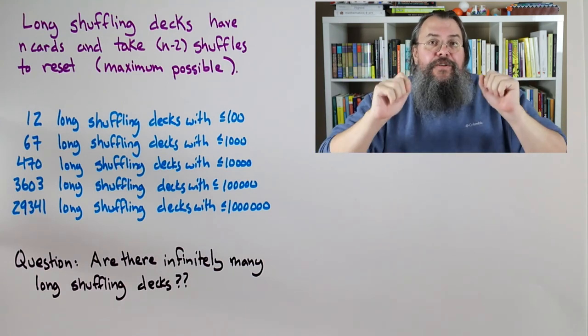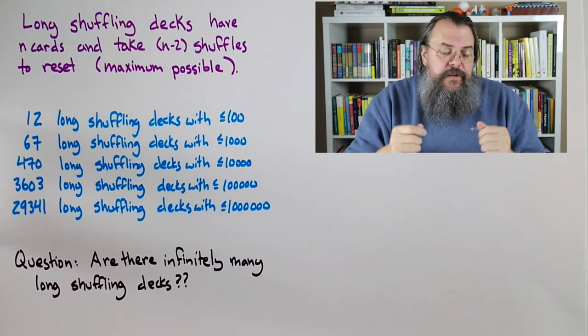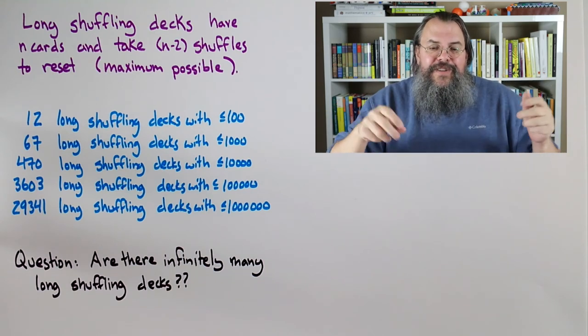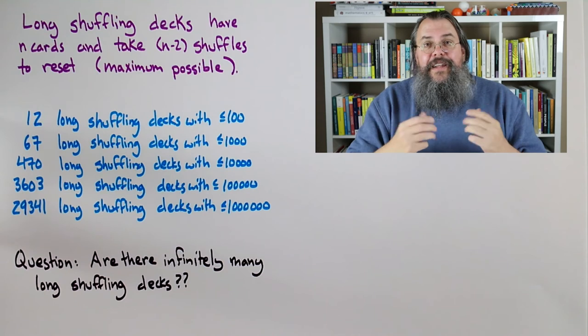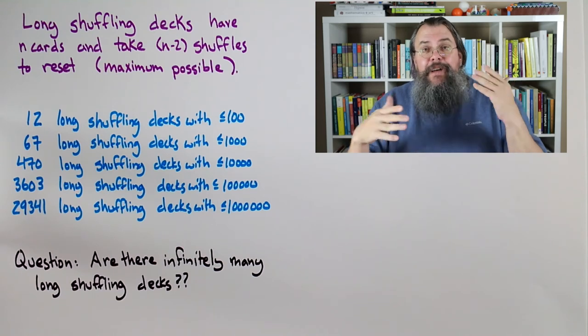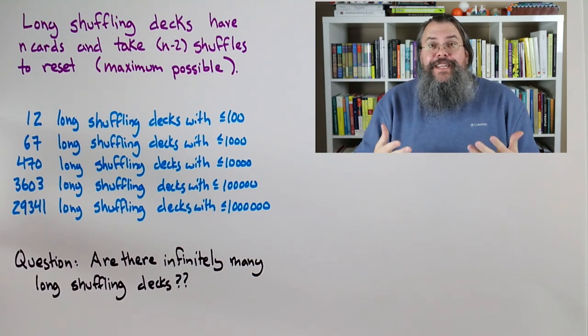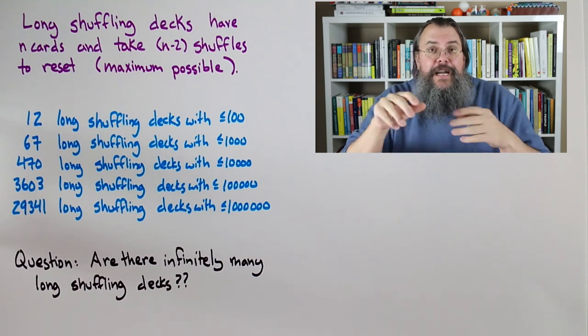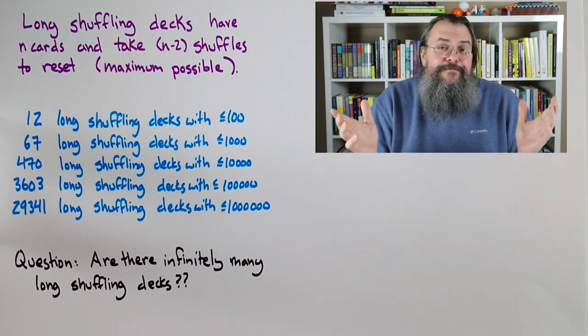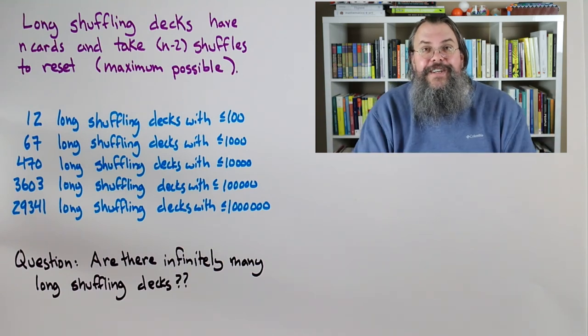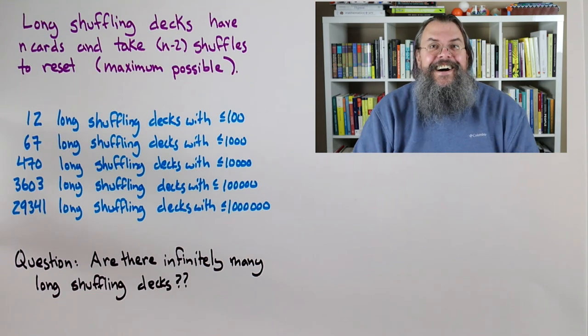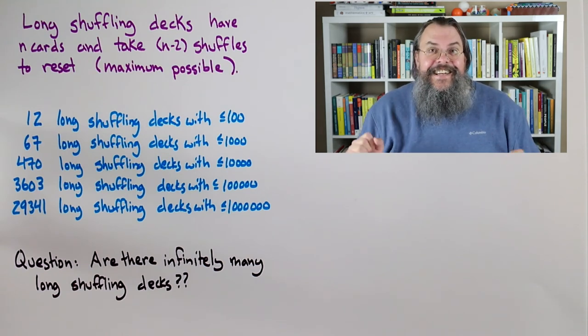And there's this beautiful question. Let's talk about for just a moment, because we're almost done here. Let's say a long shuffling deck is something where we have n cards, but it takes n minus 2 shuffles to reset. Now n minus 2 is the most that can ever happen. The reason the minus 2 is that the top and bottom cards never change position. So if it's n minus 2, what it says is that that card which is just below the top card cycles through every possible card. And so that's the maximum possible.